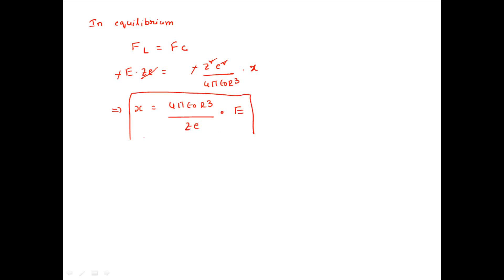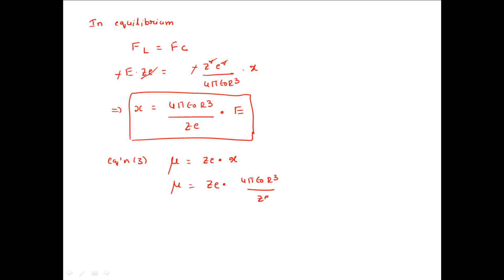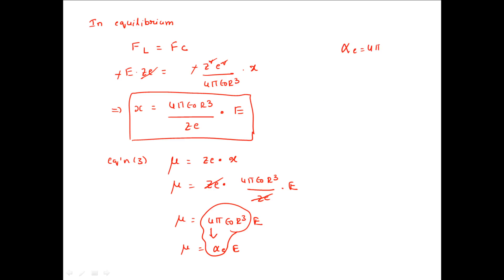From the equilibrium condition, we find x = 4πε₀r³E / ZE. From equation 3, the dipole moment μ = ZE × x, so μ = ZE × (4πε₀r³E / ZE). The ZE terms cancel, giving μ = 4πε₀r³ × E. Comparing with μ = αe × E, the electronic polarizability is αe = 4πε₀r³, which does not depend on temperature.